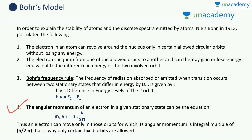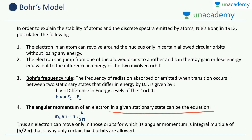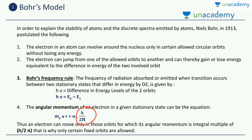Bohr said one more thing about angular momentum. The angular momentum of an electron moving in a circular orbit is given by m·v·r — you can visit your physics chapters to see how this is derived. The angular momentum of an electron in a given stationary state is equal to an integral multiple of h/2π, where h is Planck's constant and π is a constant, making h/2π itself a constant.